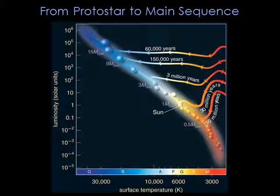The length of time from the formation of the protostar to the birth of a main-sequence star depends on the star's mass. Massive stars do everything faster. The contraction of a high-mass protostar into a spectral type O main-sequence star will take less than a million years. A star like our Sun takes about 30 million years. A very low-mass M-star can spend 100 million years as a protostar.